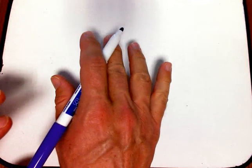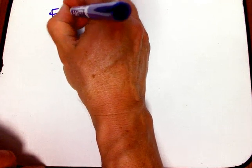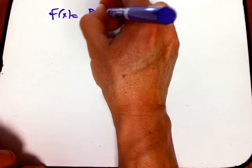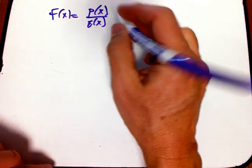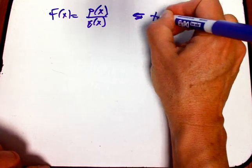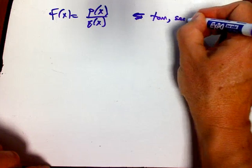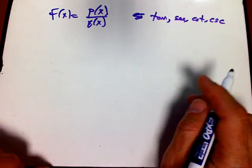I want to relate what I was saying about that use of infinity to a nice observation you can think of in an algebra 2 or basic calculus setting. If you look at a rational function — polynomial over polynomial — or also things like tangent, secant, cotangent, cosecant, things that have vertical asymptotes very often.